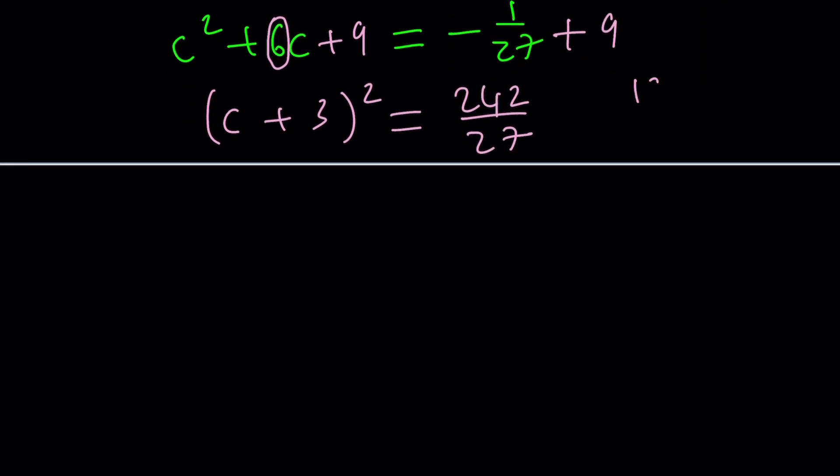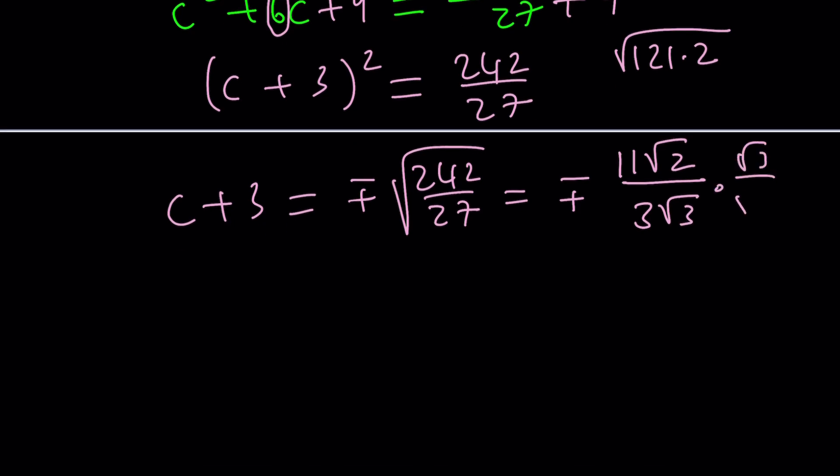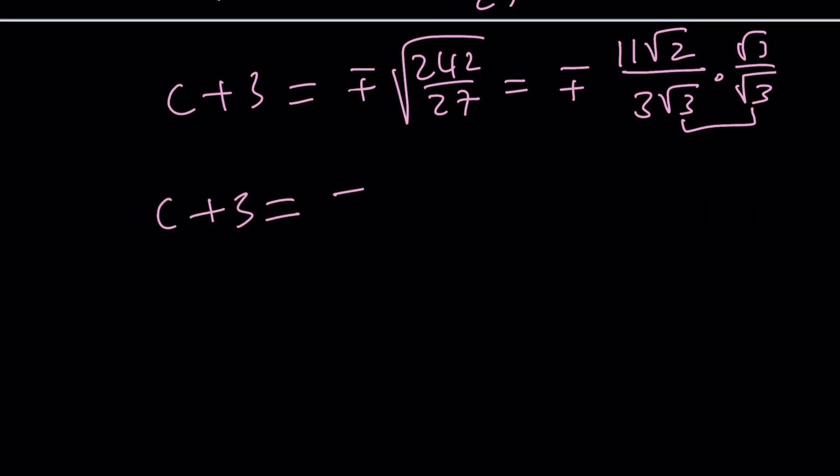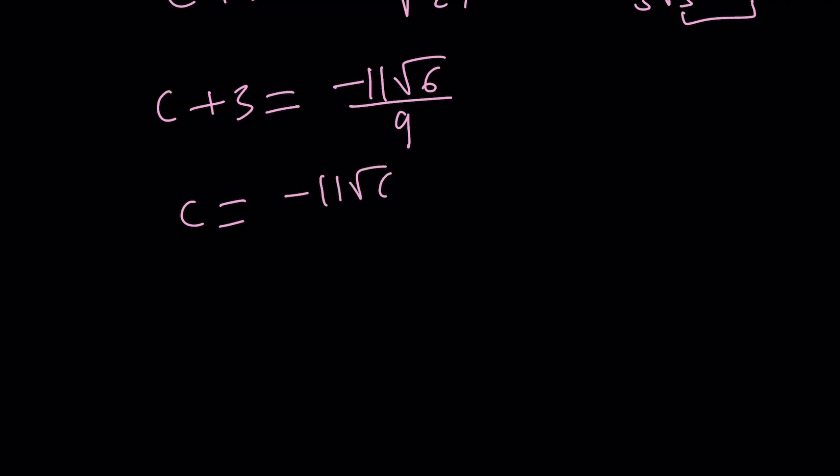242 is 121 times 2, so its square root is not bad. We're just going to have a radical. So C plus 3 can be written as plus minus the square root of this, which can be written as plus minus 11 root 2 divided by 3 root 3. Maybe multiply by root 3 to rationalize the denominator. So C plus 3 becomes negative 11 root 6 divided by 9. You like that? Not really. It's super bad.